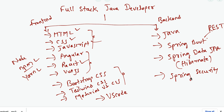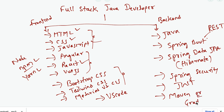Next you need to learn Spring Security. Spring Security is the de facto standard for securing web applications as well as REST APIs in Java. Along with Spring Security, you also need to learn JWT to implement token-based authentication. Next, learn the build tools in Java — we have Maven or Gradle. These are the popular build tools used to manage dependencies in Java projects.